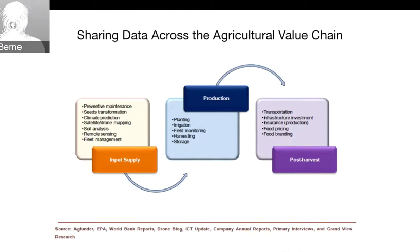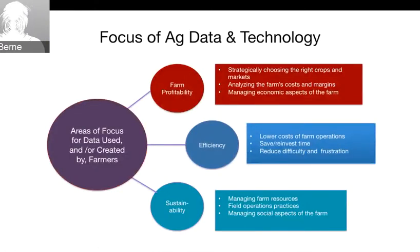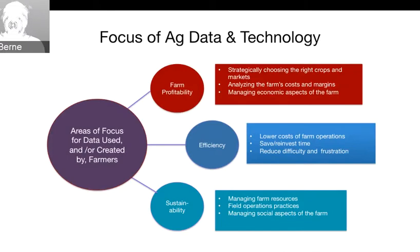For the farmer, the focus should be around three key areas. First, farm profitability — strategically using data to choose the right crops and markets, analyzing your costs and margins, managing the economic aspects of your farm, lowering costs and time, and being more efficient. Second, reducing difficulty and frustration — that has a lot of work to do on the manufacturer's side, making sure data services and equipment are easy to use and that they talk to each other. There's still more work to do there.